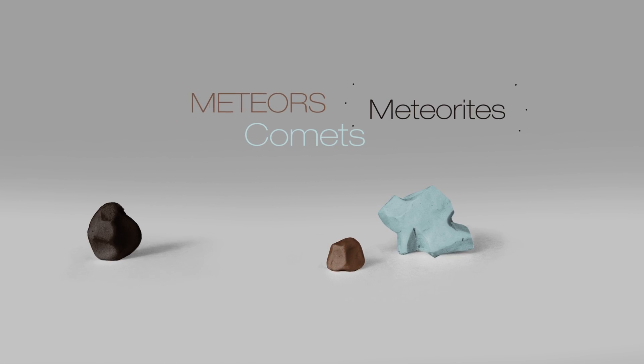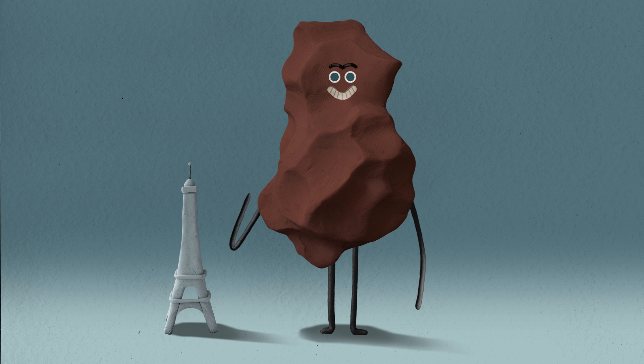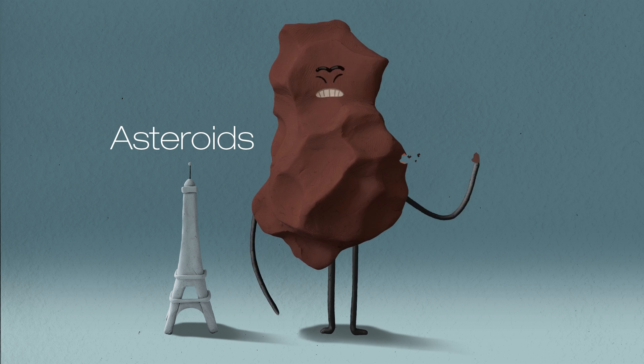There are lots of names associated with space rocks, so what's the difference? Well, the bigger rocks are called asteroids. The smaller are meteoroids.